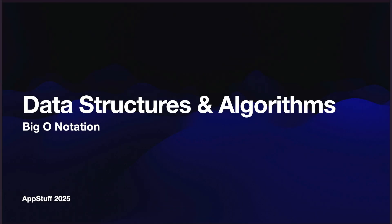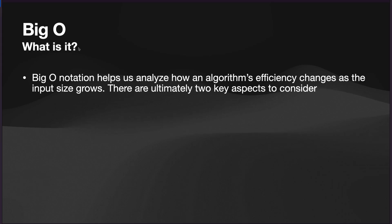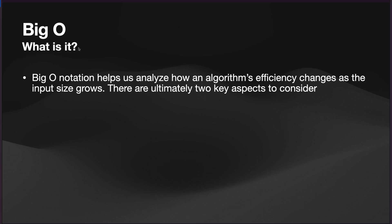What is going on, everybody? Welcome back. Before we get started with the solution to our follow-up problem, we need to talk about a very key concept in data structures and algorithms that is referred to as big O notation. So let's go ahead and dive in. What is it? So big O notation essentially helps us analyze how an algorithm's efficiency changes as the input size grows.